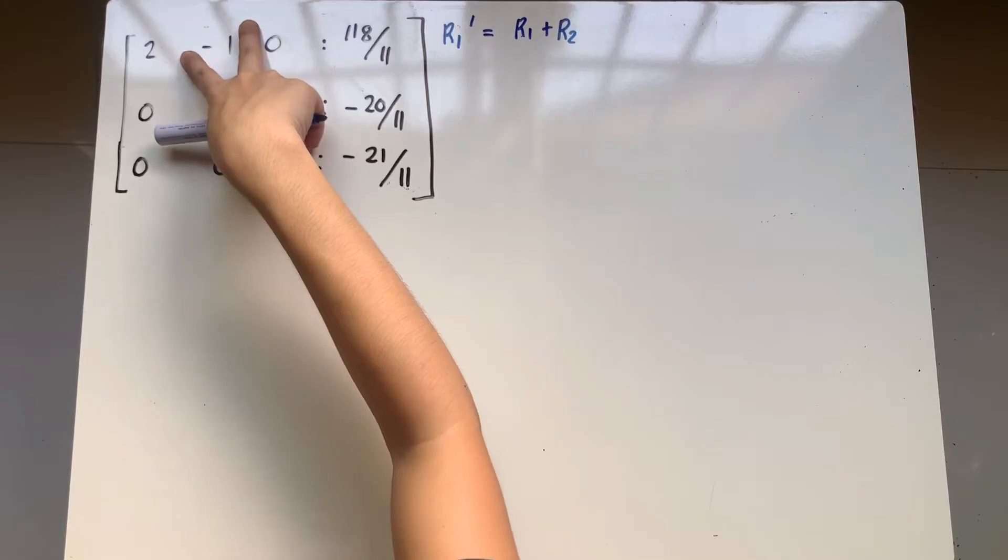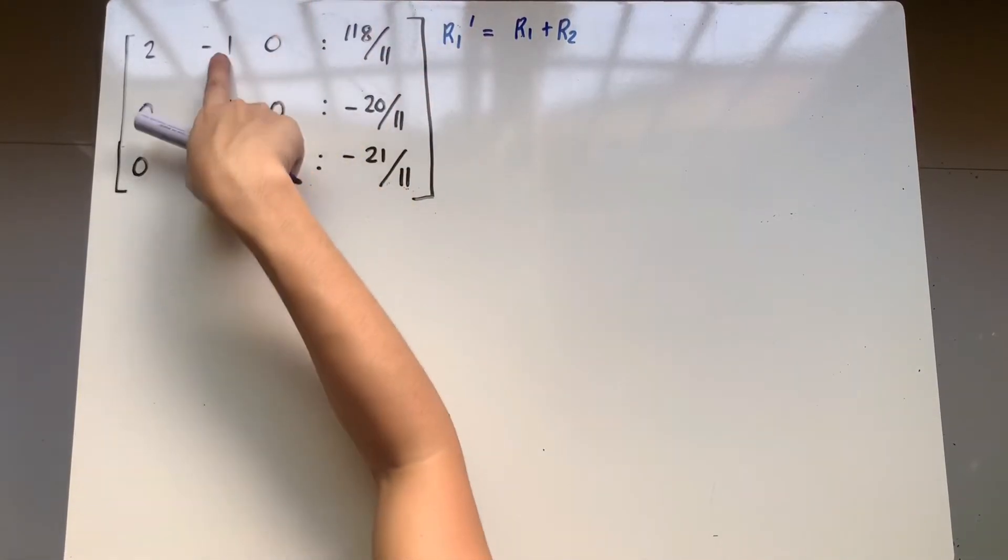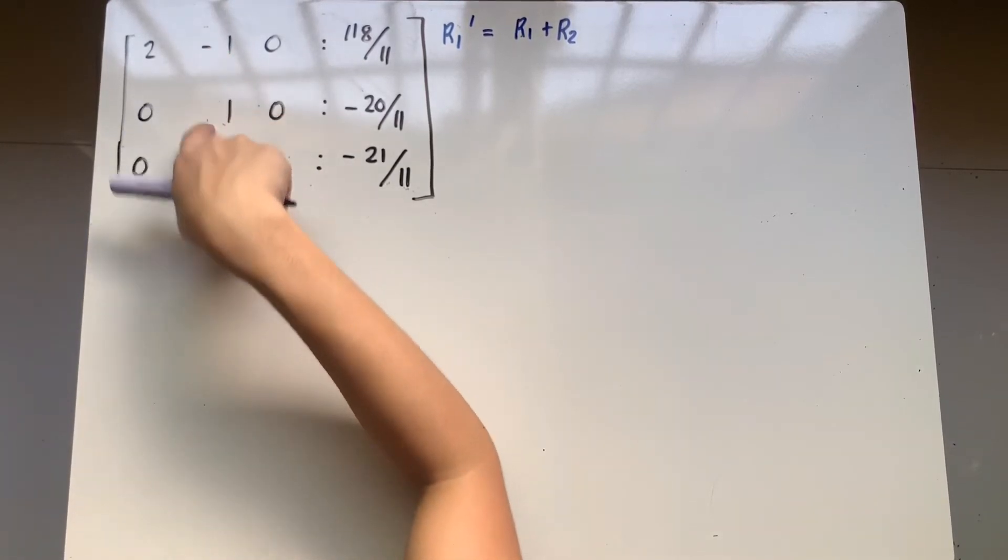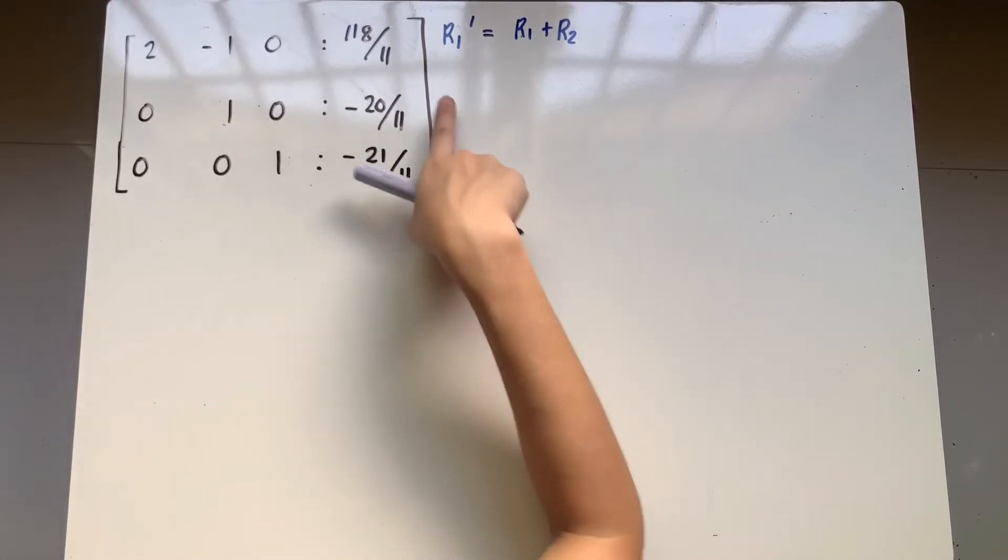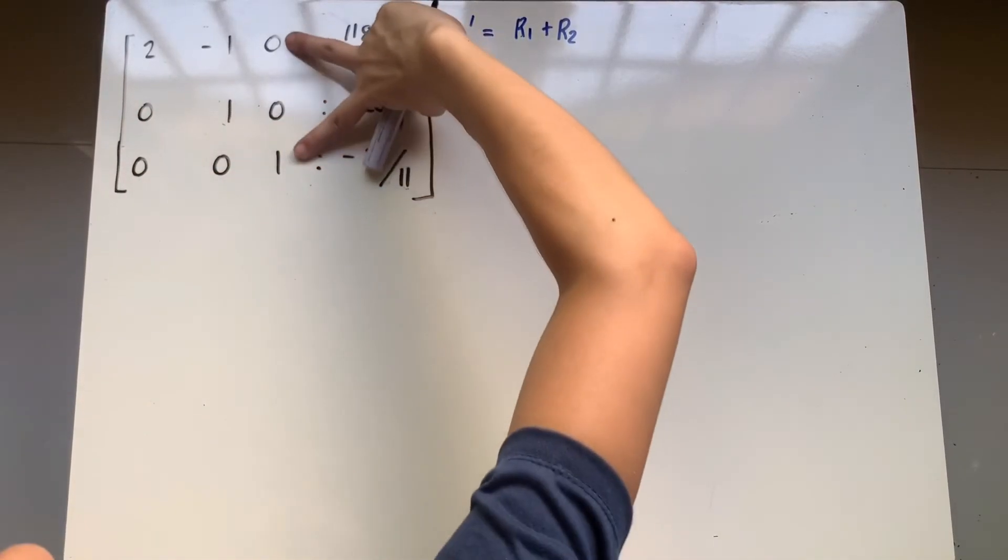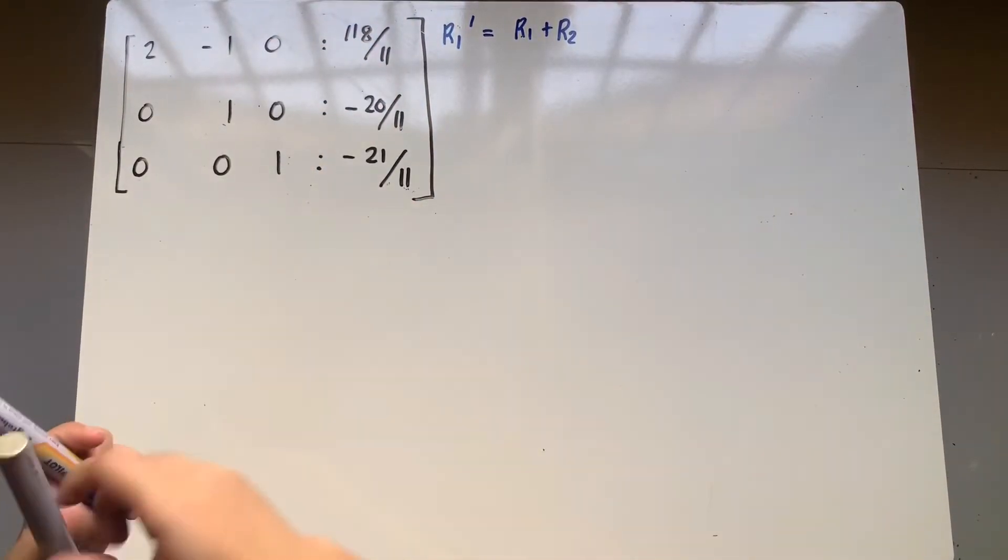Tatandaan ha, kapag gumagawa tayo ng formula, ibinabase natin yung formula dun sa element na gusto natin baguhin. So, since gusto kong baguhin si negative 1, gagawin ko siyang 0. Yung katapat niya, in terms of columns, dun ako magbabase. So, ang pinakamadaling gamitin is, of course, ito. Bakit? Kasi kapag ginamit mo si first row, maaapektuhan si itong element na ito. Mawawala yung pagka-zero niya. So, let's do that.